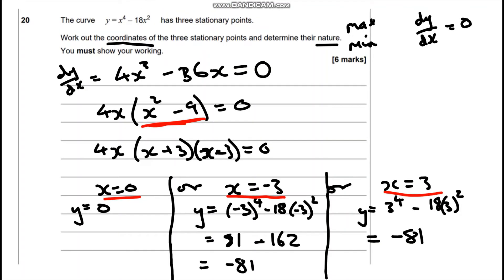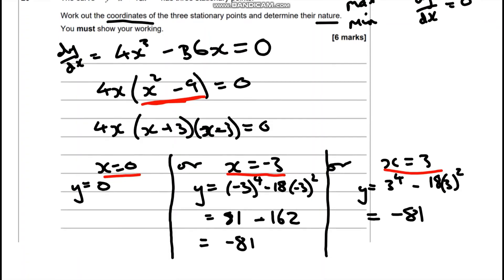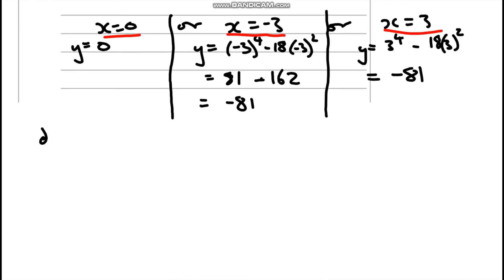So now we've worked out the coordinates, we need to decide whether those stationary points are maximum or minimums. Now the way we're going to do that is by taking the second derivative and substituting in our values. Now if d squared y by dx squared is less than 0, this tells us our coordinate is a maximum. If d squared y by dx squared is greater than 0, it tells us that this is a minimum.